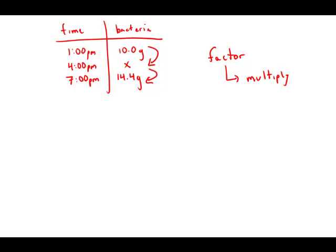For lack of something better to call it, I'm going to call that factor r. It's the ratio. And we know that 10 times r equals x. We could say x times r equals 14.4, but instead I'm going to say 10 times r times r equals 14.4.